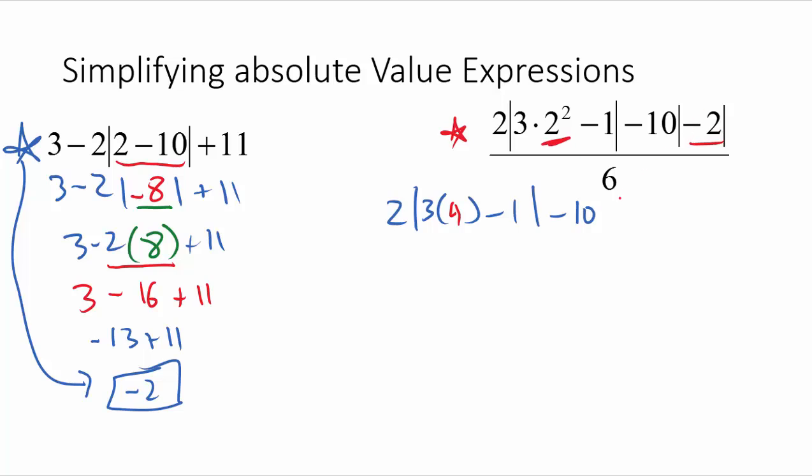So all I did is I dropped the absolute value bars, made that 2 positive. Now we'll go down to the bottom here and leave our 6.